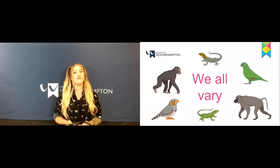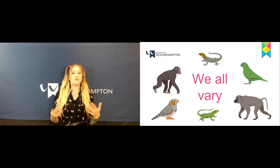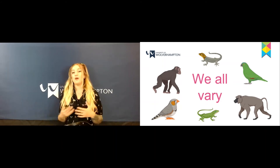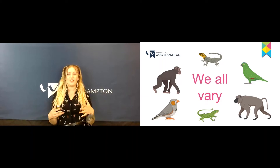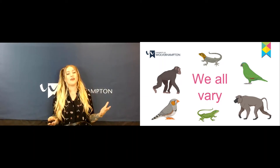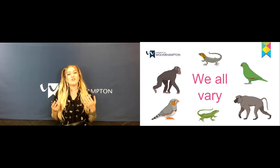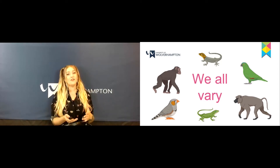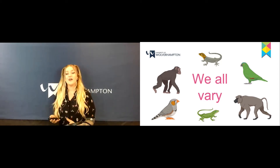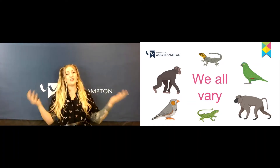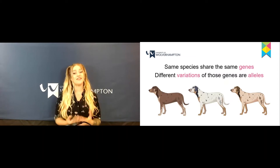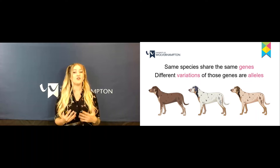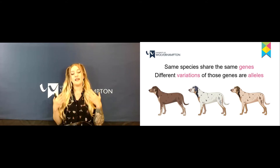So what is variation? We all vary as a species, whether this be between species — like how a chimpanzee varies from a macaque or a gorilla — or within a species, just like how birds can vary between different colours. These variations can be environmental, such as weight, or they can be genetic, such as colouration. Organisms from the same species share the same genes but you can have different variations of those genes,